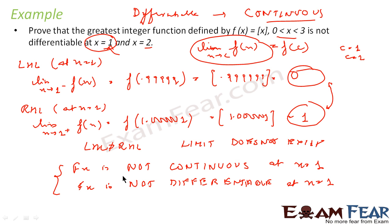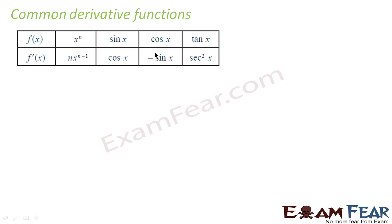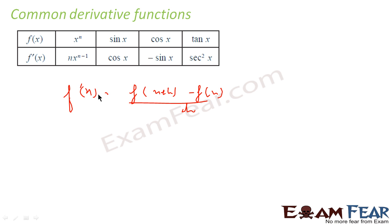Thus we have proved that the greatest integer function is not differentiable at x = 1. Similarly, we can do the same for x = 2 — the same approach applies. Now, the formula to find the derivative is f'(x) = limit as h tends to 0 of [f(x+h) minus f(x)] divided by h.